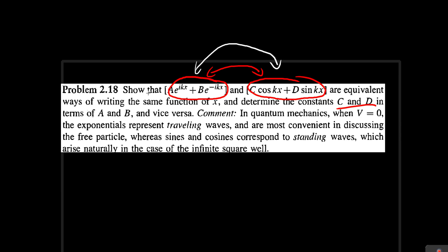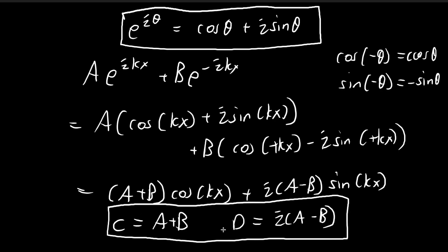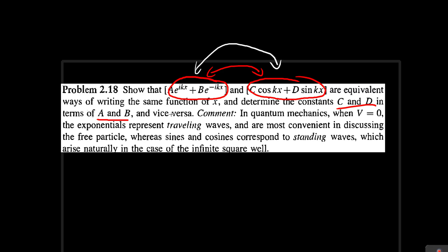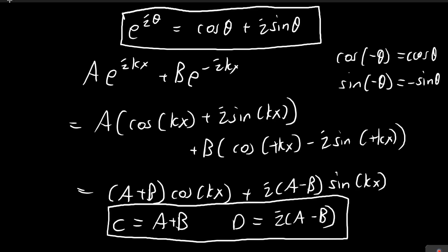But then in this problem we're also asked to do this the other way around. Just now we defined c and d in terms of a and b. Now we also want to define a and b in terms of c and d. So let's do that as well. All we have to do is solve a system of linear equations.